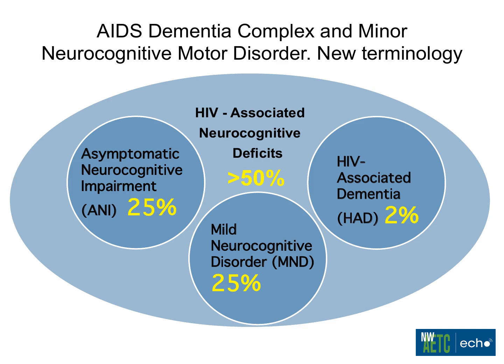To summarize the picture of HAND: we used to call it AIDS-dementia complex and minor neurocognitive motor disorder, but the new terminology is HIV-associated neurocognitive disorder, which includes asymptomatic neurocognitive impairment, mild neurocognitive disorder, and HIV-associated dementia. Those are the three categories with their respective prevalences.